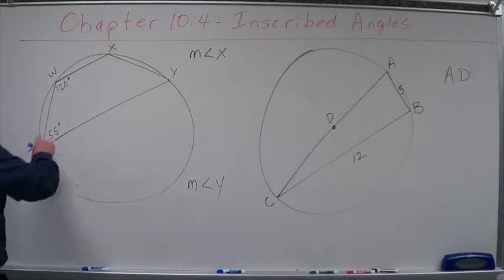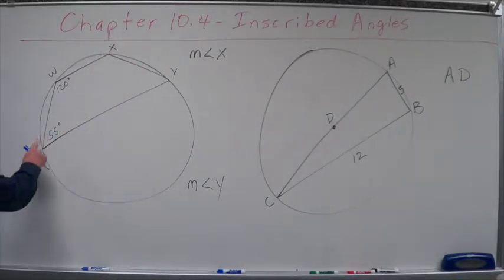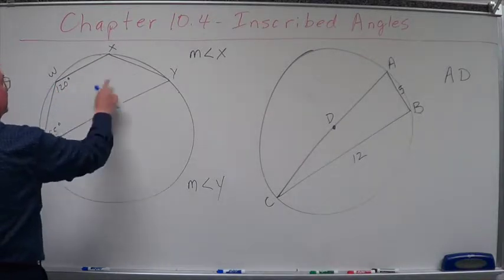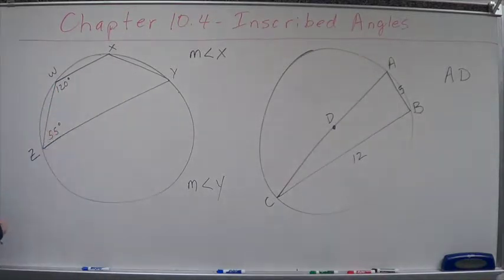That theorem says if you have a quadrilateral inscribed in a circle, the opposite angles are what? Supplementary.